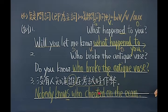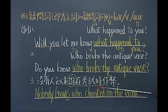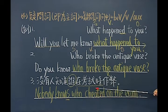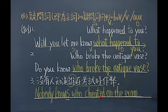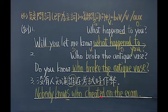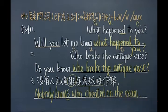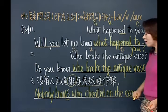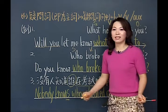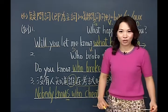所以没有人知道谁在考试的时候作弊：Nobody knows who cheated on the exam。在这里学到了一个动词Cheat叫做作弊，本意叫欺骗。Who本身就是主词，所以后面跟动词。你可以给自己造一个句子：Nobody knows...用一个疑问词来引导一个子句。